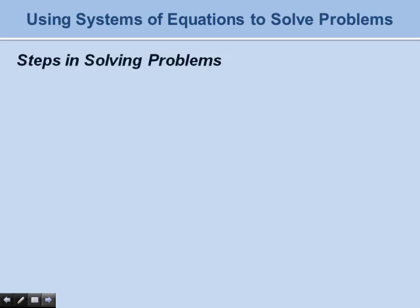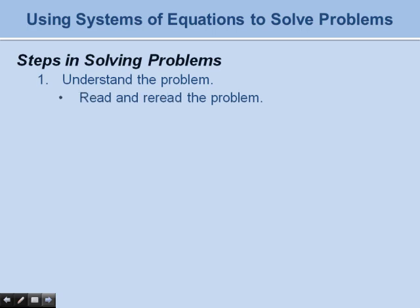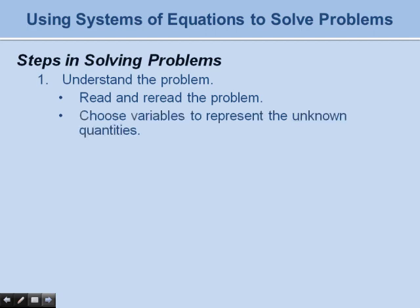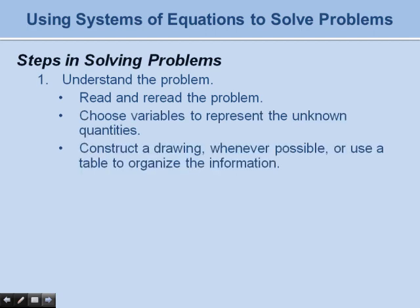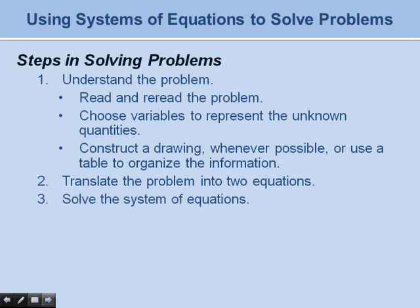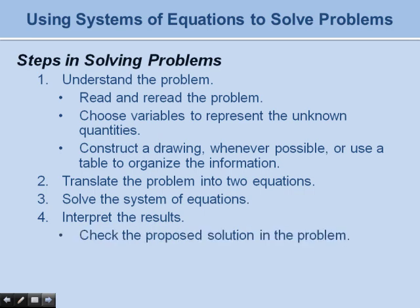Here are the steps we need to go through to solve problems using systems of equations. Step 1: Understand the Problem — read and re-read the problem, choose variables for the unknown quantities, and construct a drawing or table to organize information. Step 2: translate the problem into two equations. Step 3: solve the system. Step 4: interpret the results — check the solution in the original problem and state your conclusion in words.